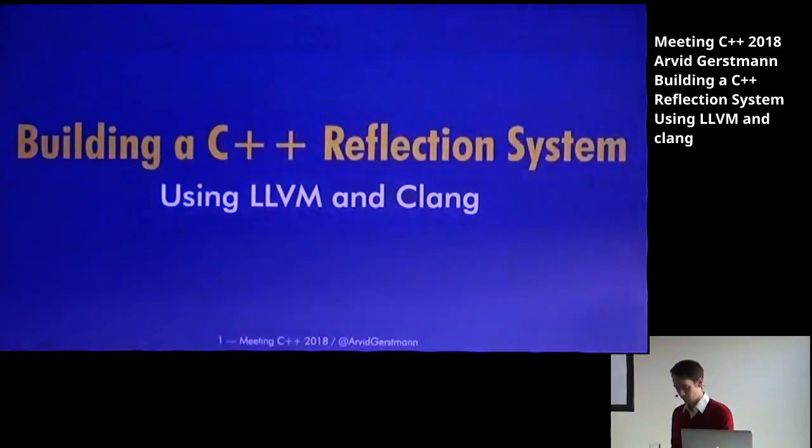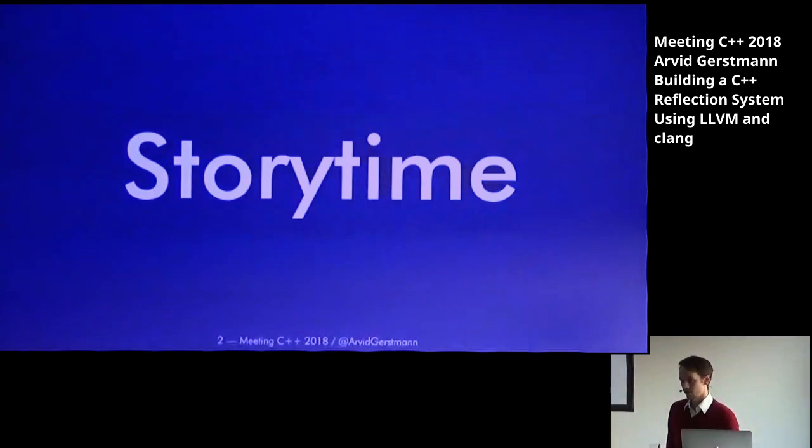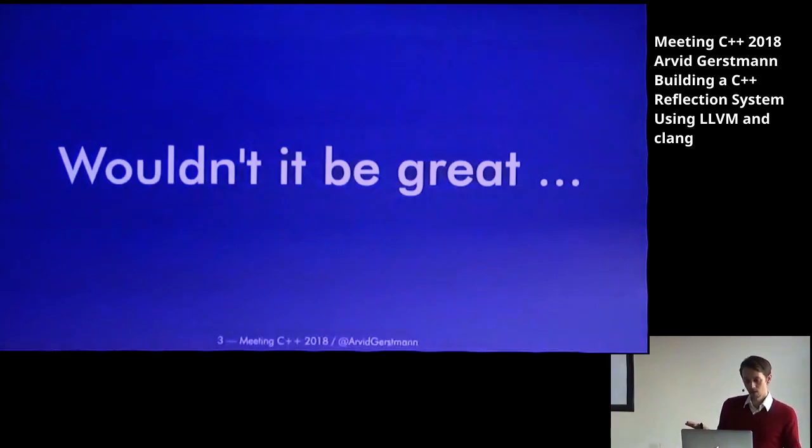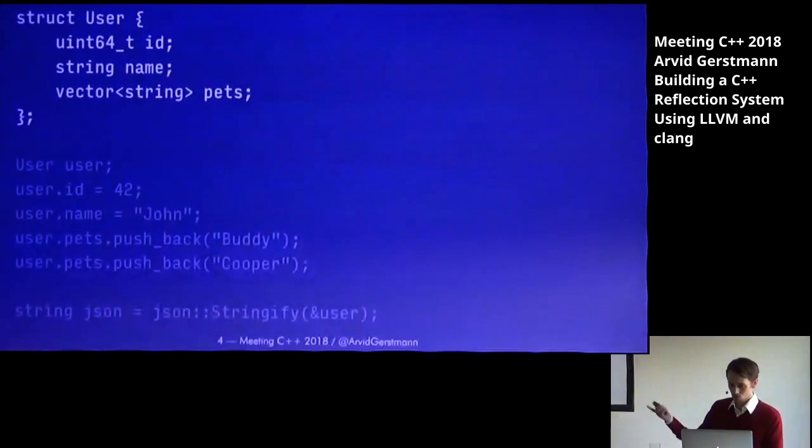I want to start with a little bit of story time. Wouldn't it be great if we could take any structure, or any class for that matter, in our C++ programs, plug them into a function, and get a JSON string out of that? So we might want to send it over the network, for example.